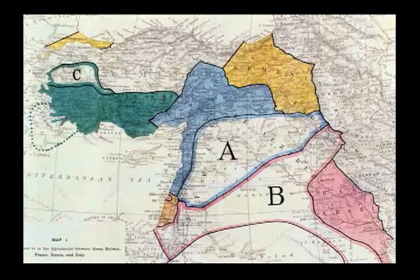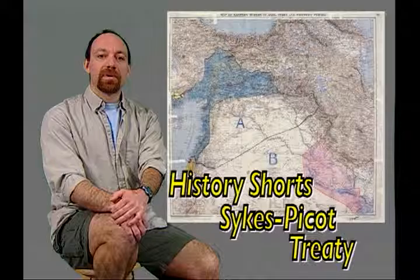The Sykes-Picot Agreement that was signed in May 1916 divided the Middle East into a French-administered area in the north and a British-influenced area in the south, with Palestine set aside as an international zone.